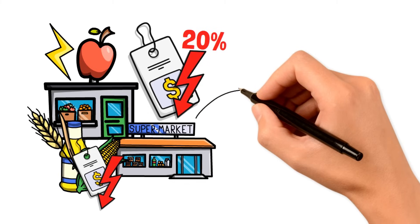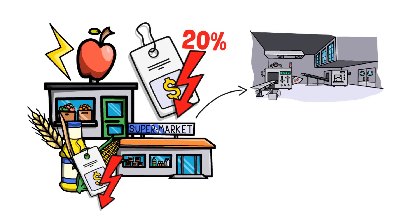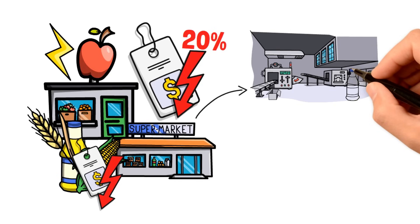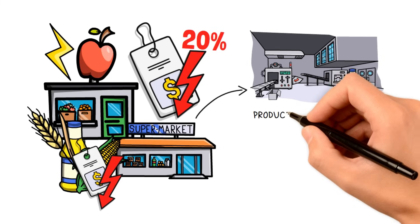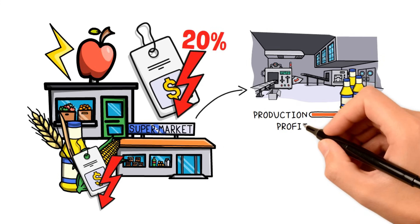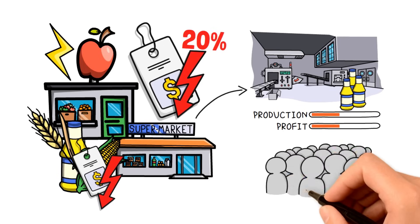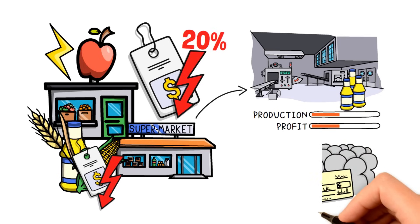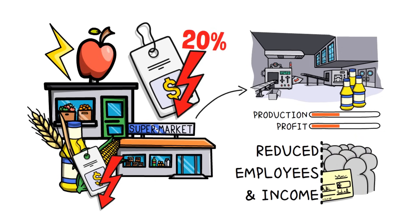When the price of a key commodity drops significantly, it can impact industries and businesses associated with that commodity. For instance, if oil prices decrease sharply, it may lead to reduced revenues for oil-producing countries and companies. This, in turn, can trigger a chain reaction. These entities may cut back on spending, investments, and employment. Job losses and reduced income can then lead to lower consumer spending, which forms a significant portion of economic activity.